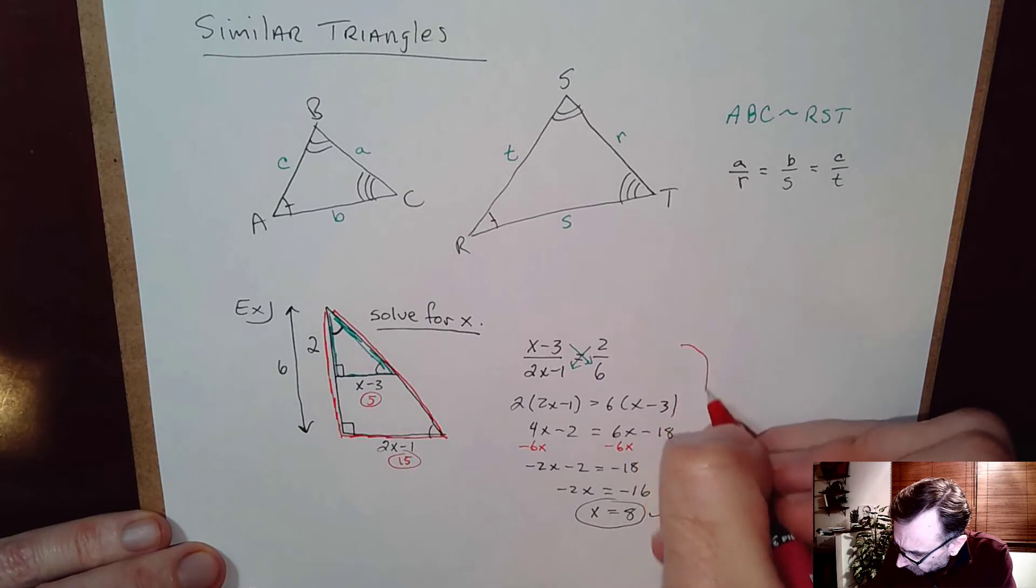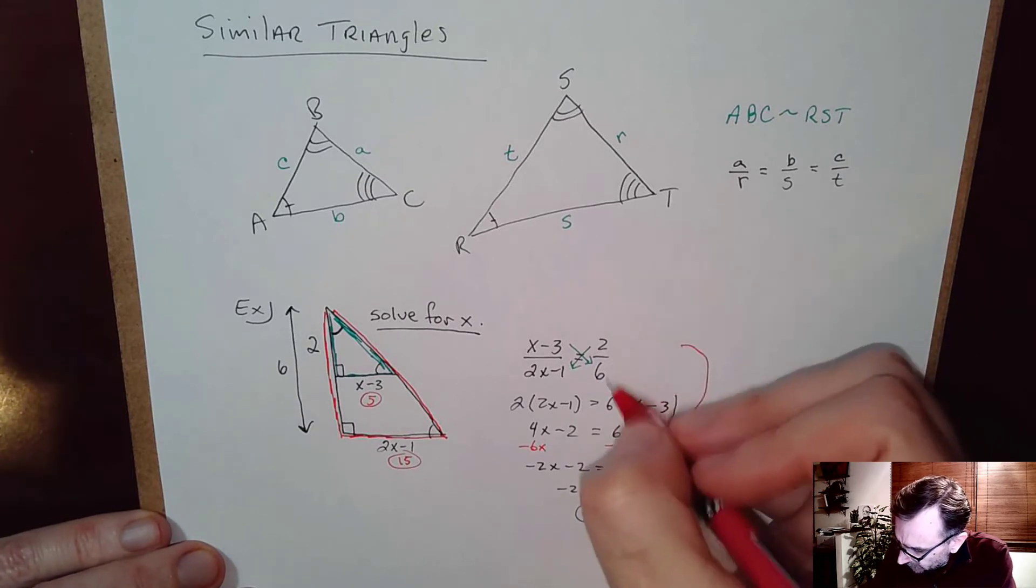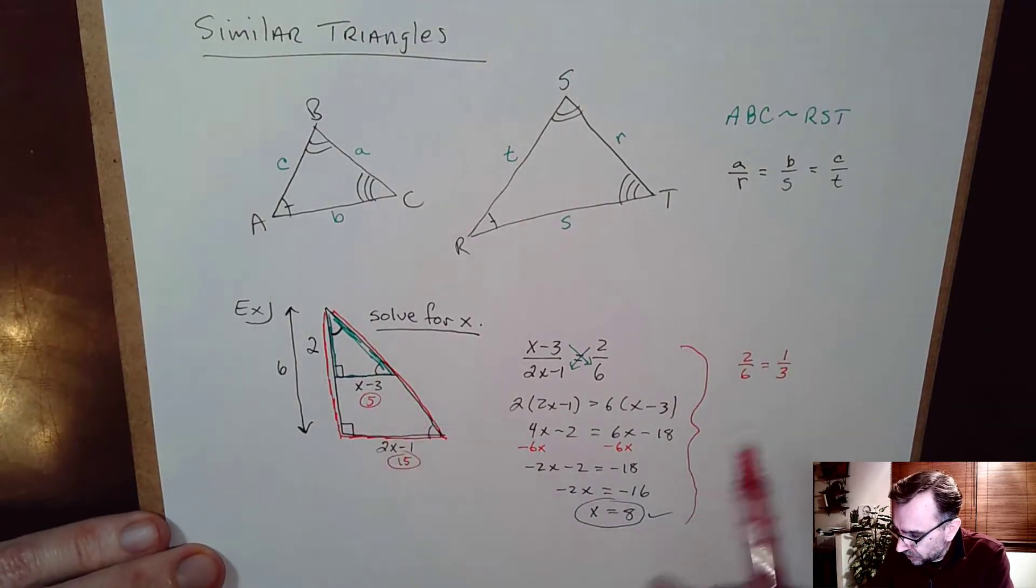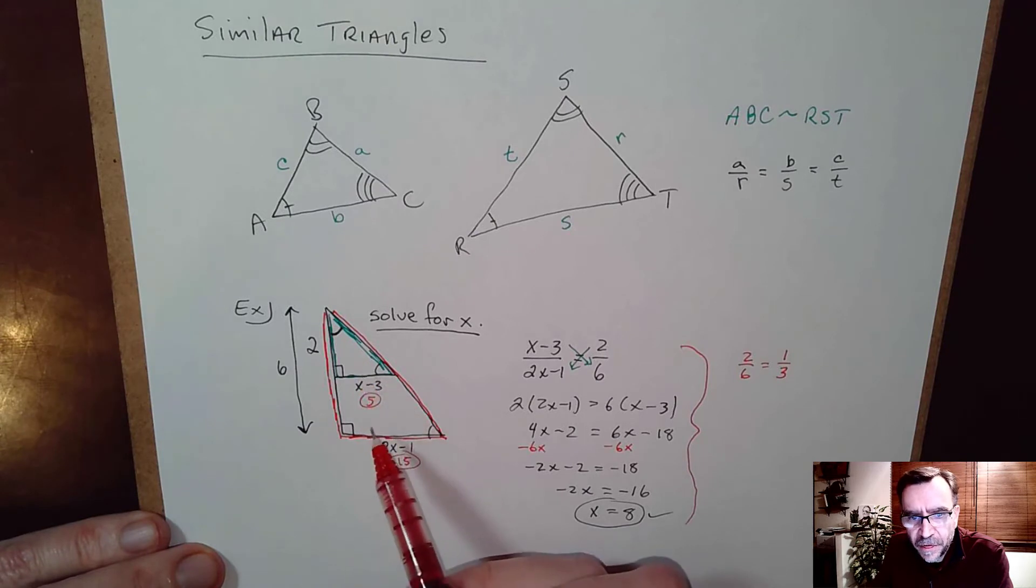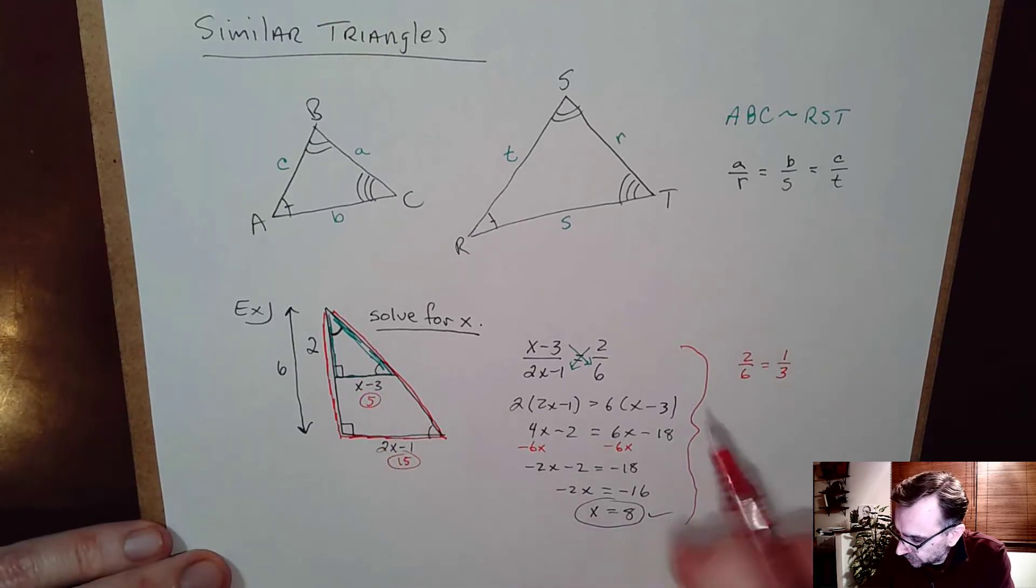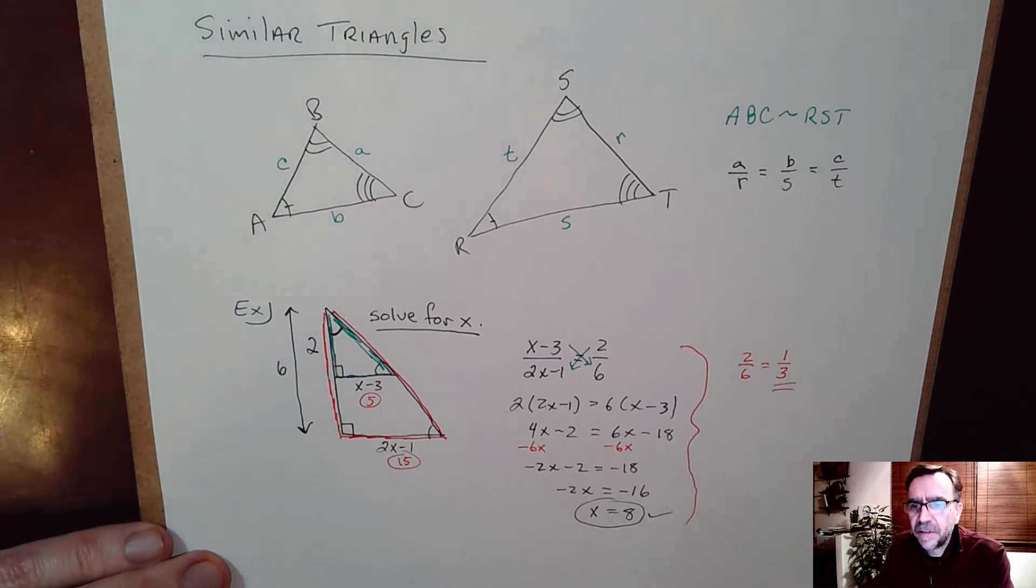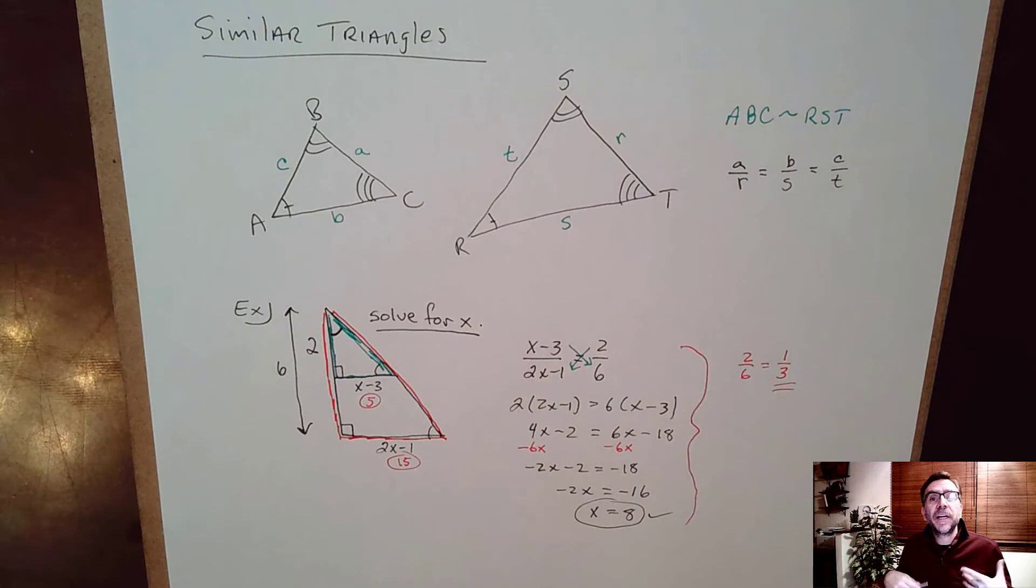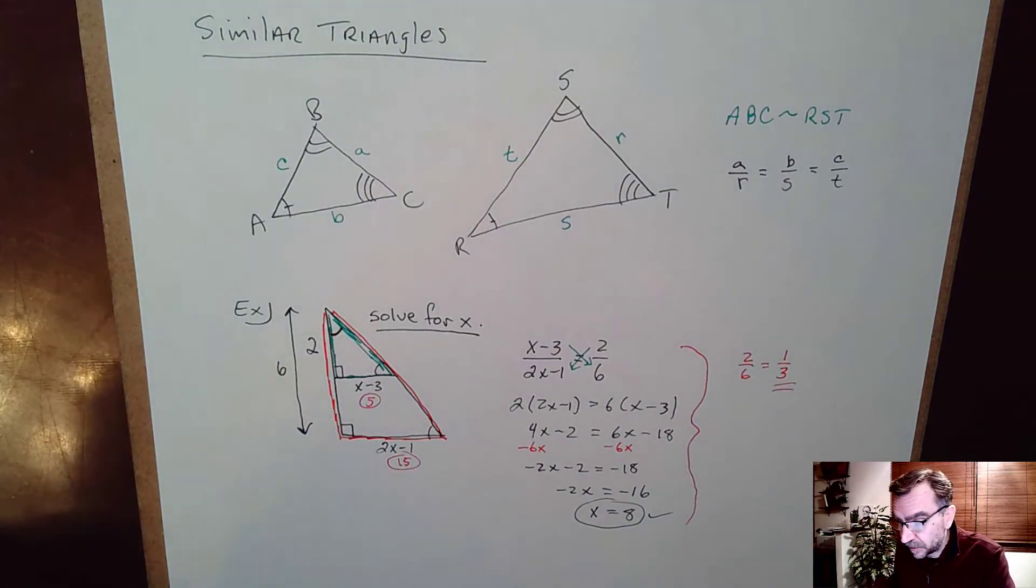Okay and just really quick the ratio here 2 over 6 is called the scale factor. Okay so in other words when I reduce I get one third. So in other words the smaller triangle is one third the size of the bigger triangle. And it's the scale factor that gives trigonometry its power. Okay we'll see later when we define right triangle trig this becomes very important.